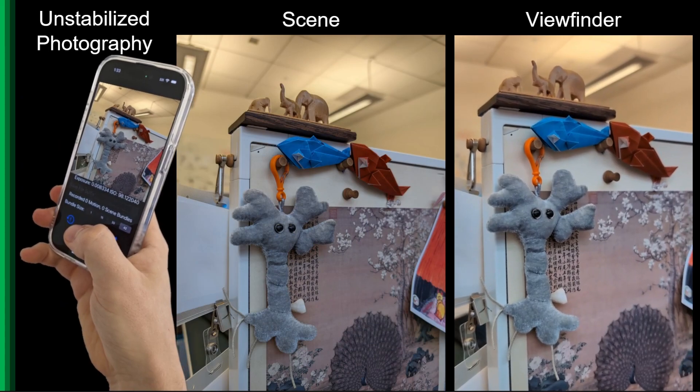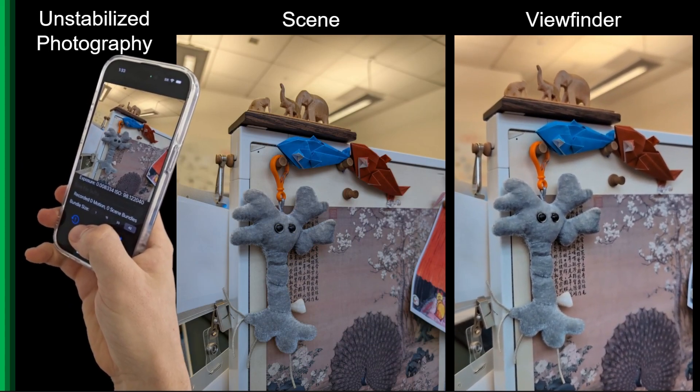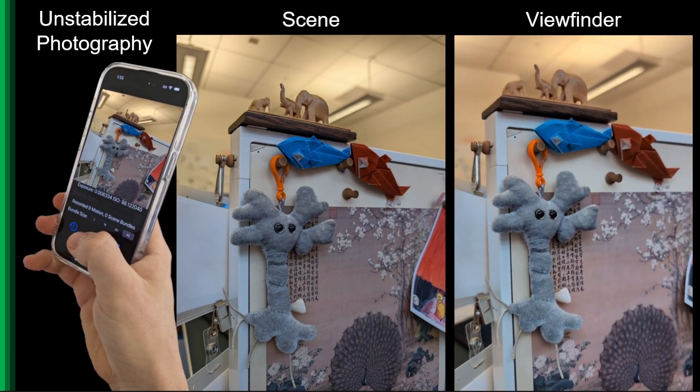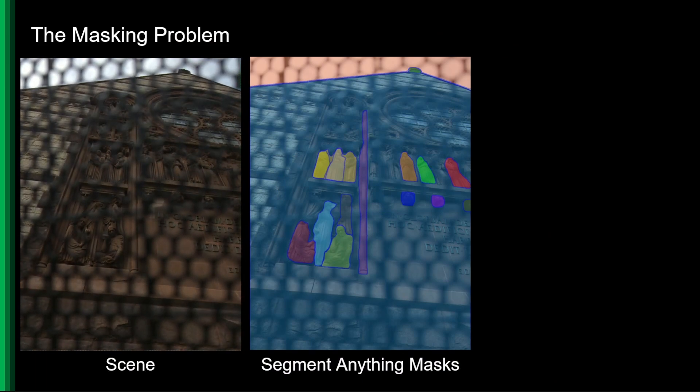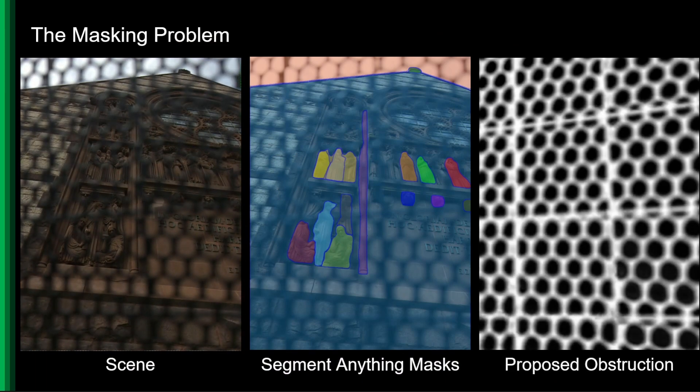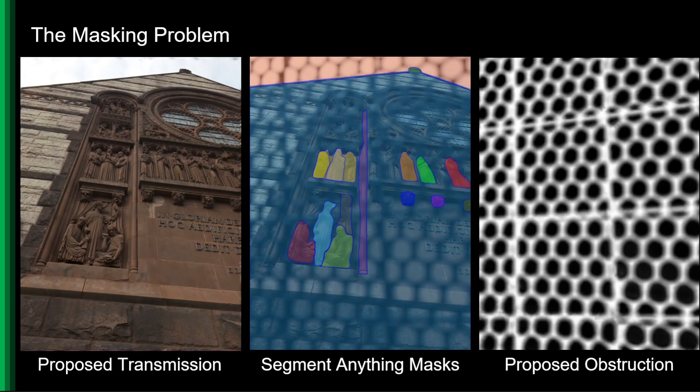In this work, we leverage small motion cues naturally generated by unstabilized hand-held photography to directly from a small video clip estimate a high-quality alpha mat of the obstruction and recover the hidden scene behind it.